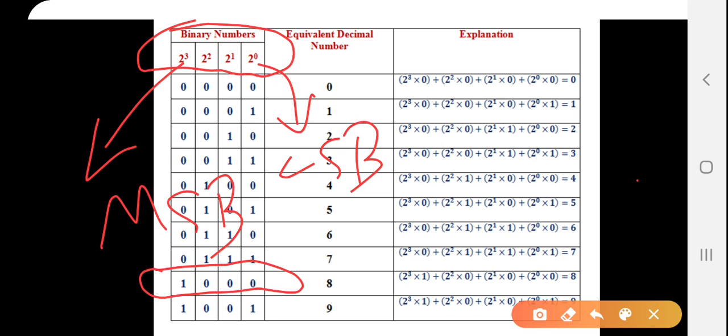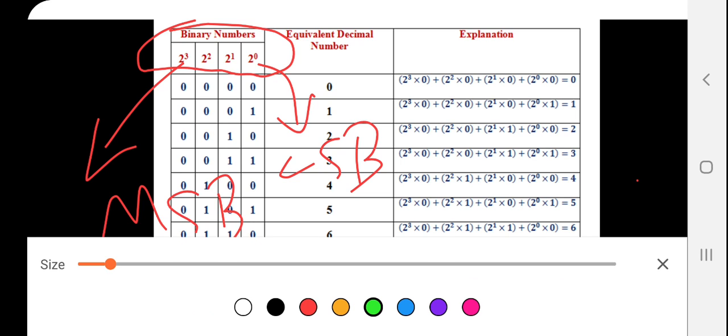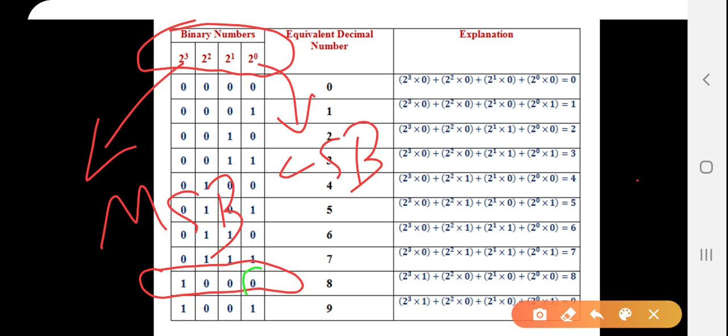For example, the weight of this 0 is 2 to the power 0, weight of this 0 is 2 to the power 1, weight of this 0 is 2 to the power 2, and weight of this 1 is 2 to the power 3. So you need to multiply and add in this way so that you will be able to have 8 as a decimal number.